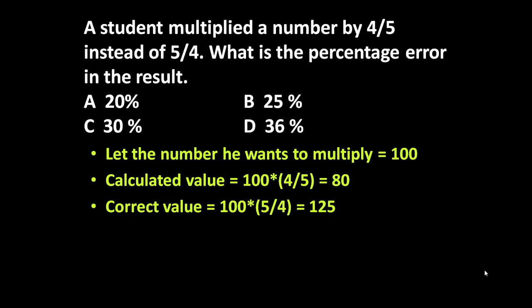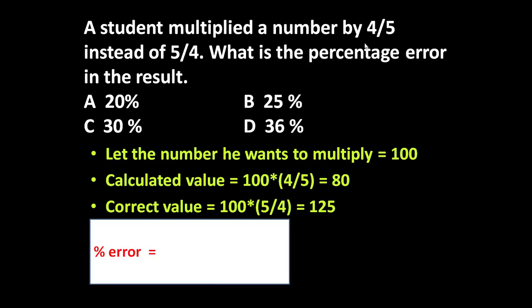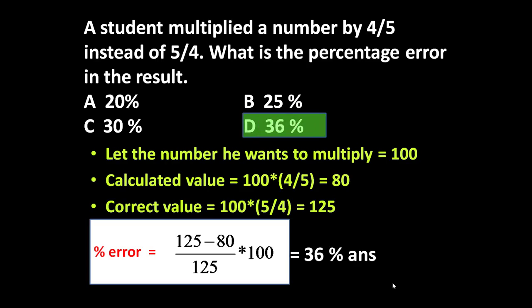So the required percentage error in the result is equal to (125 minus 80) divided by 125 times 100. This equals 36 percent. It means in his result, there is a total 36 percent error.